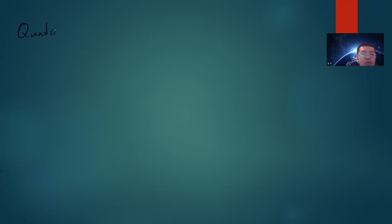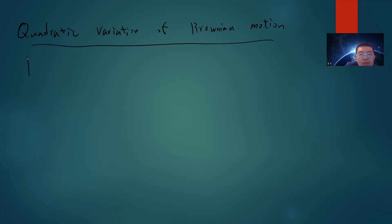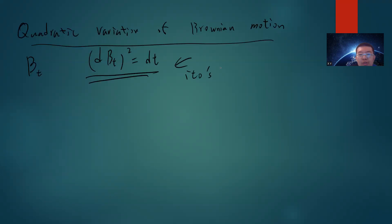In this video, I want to talk about the informal definition, or basically explain what the quadratic variation of Brownian motion is. When you see stochastic calculus, let's say you have some Brownian motion B of T, you will see this kind of formula. Basically you can view this as Itô's formula, or Itô's lemma.